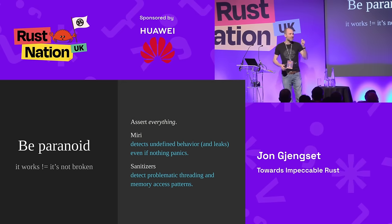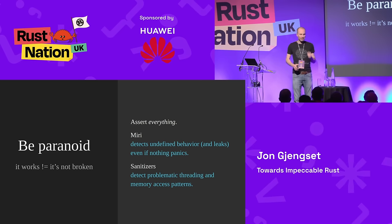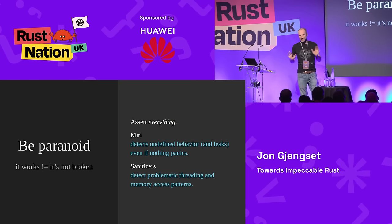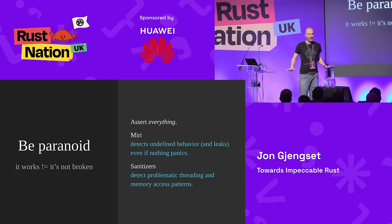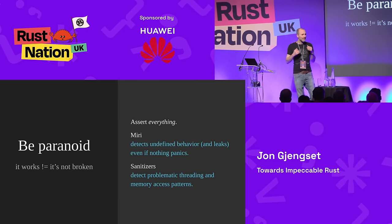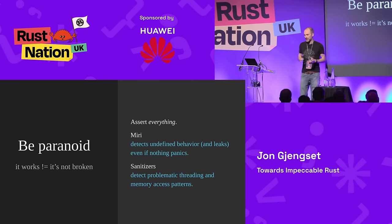The first part is to be paranoid. Just because your tests pass does not mean your code is not broken. The tests only test what they've been written to be, and even then it's not clear they actually test what you think they do. You want to assert everything throughout your codebase — any assumption you make in your software, have an assertion for. Be defensive and make sure that anything you assume is true is checked.